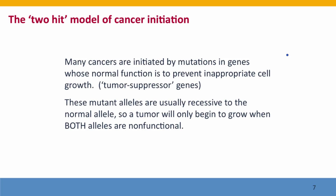The two-hit model of cancer initiation says that many cancers are initiated by mutations in genes like the retinoblastoma gene — genes whose normal function is to prevent cell growth. These are what are called tumor suppressor genes.